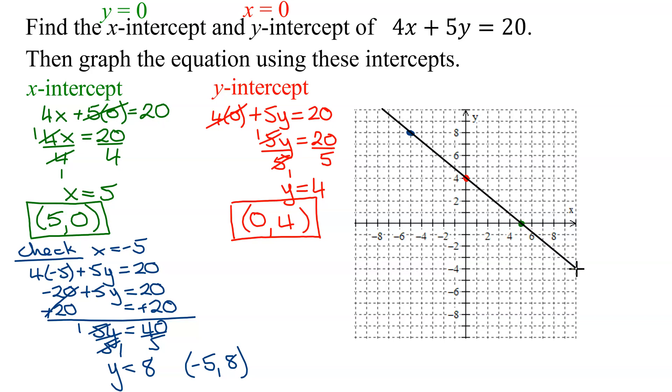And then don't forget, always put arrows on the end of your line. So there is the graph of 4x plus 5y equals 20. And here's the x-intercept and here is the y-intercept.